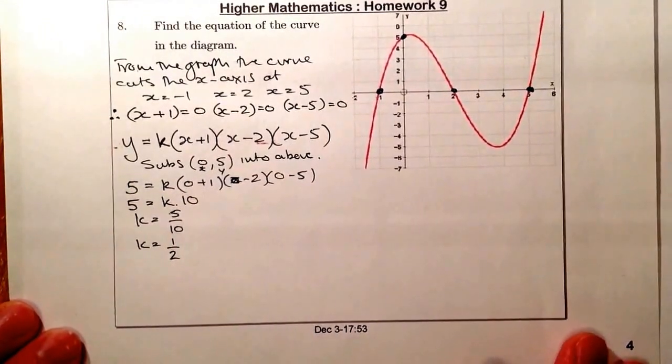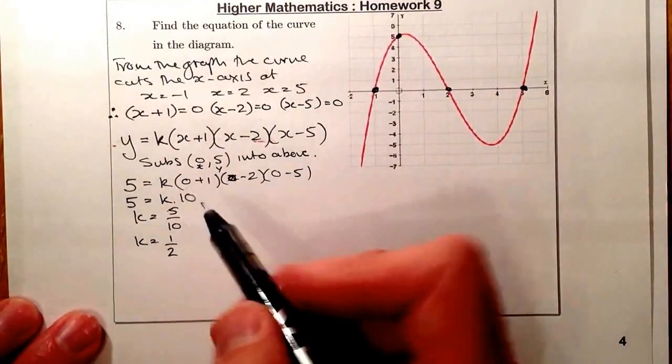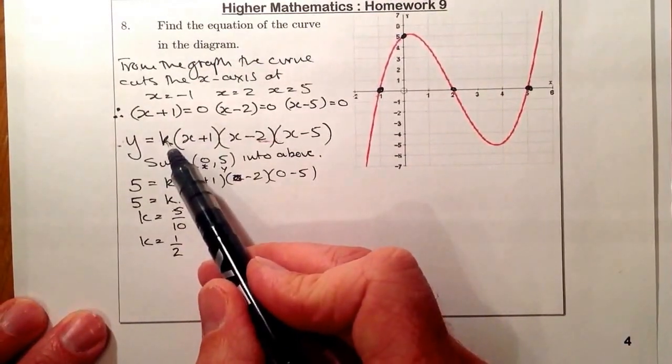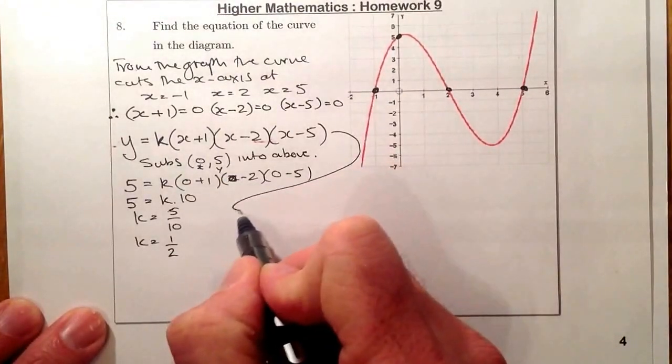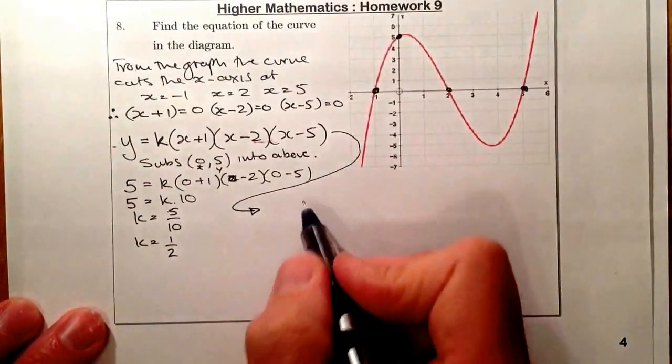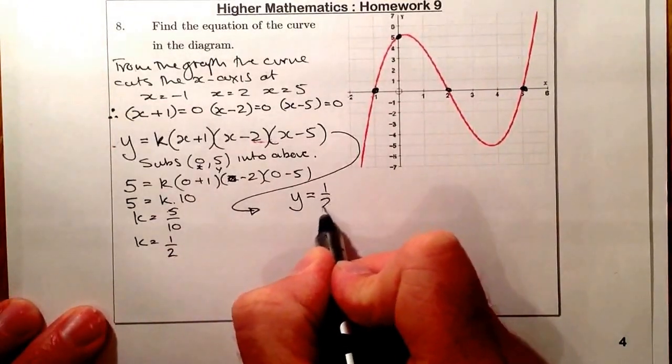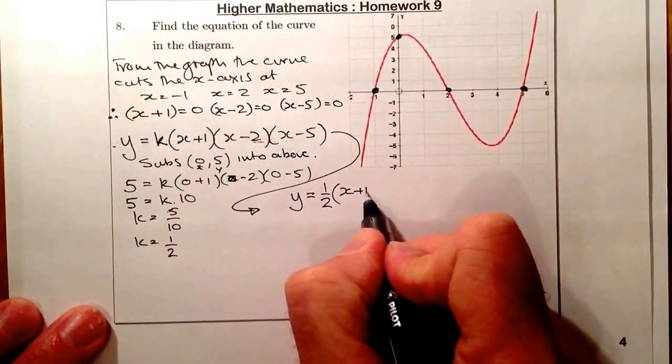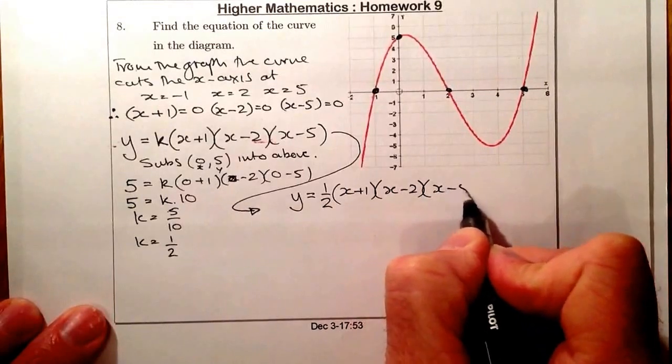So I know the value that I'm going to be multiplying now. So what I'll do now is write this here, this k, into here, into that equation. So I'm just bringing that equation down to here, and I'm just going to write that in. So what I have is y is equal to a half, and that's going to be x plus 1, x minus 2, x minus 5.